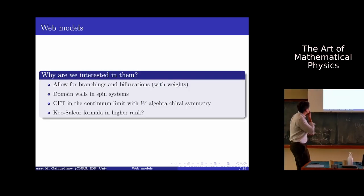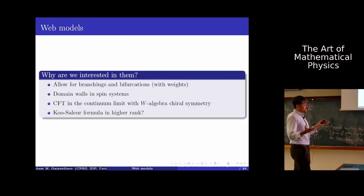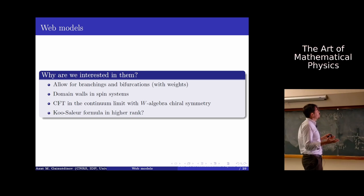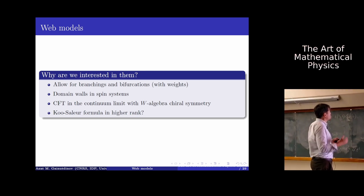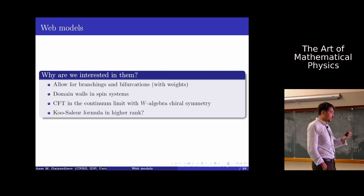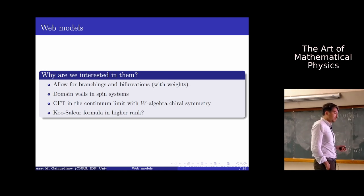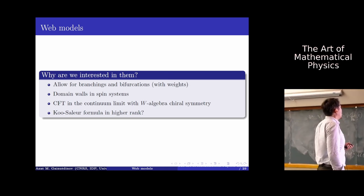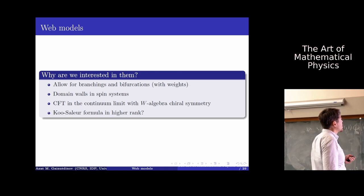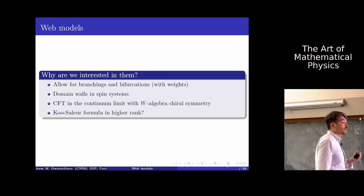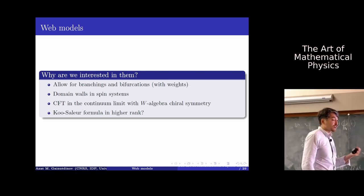Why are we interested? Because there is the new phenomenon of branching. Also, the models will describe domain walls in spin systems, so there will be interesting applications to spin models. We also expect that in the continuum limit we will discover CFTs with W-algebra chiral symmetry.